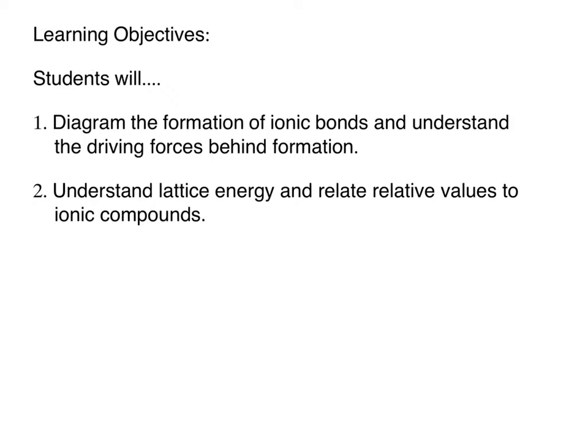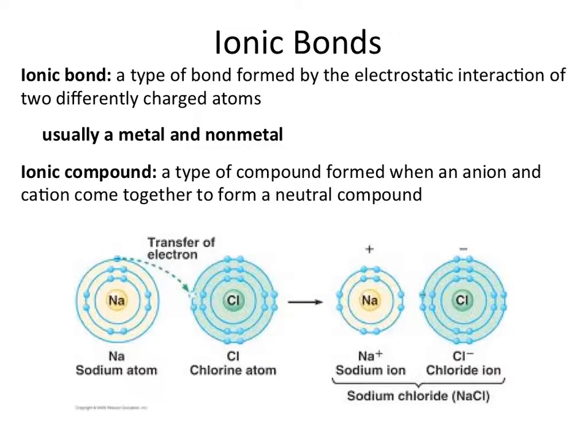An ionic bond consists of two differently charged atoms that are attracted through electrostatic interactions. Basically, we have one thing that's positively charged and one thing that's negatively charged, and they attract each other to form an ionic bond. This usually occurs between a metal and a nonmetal, such as